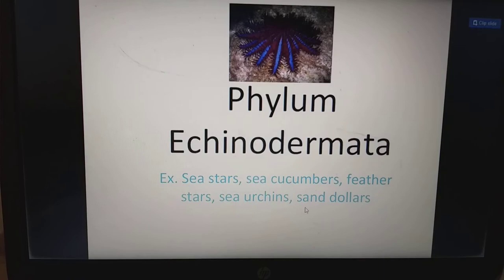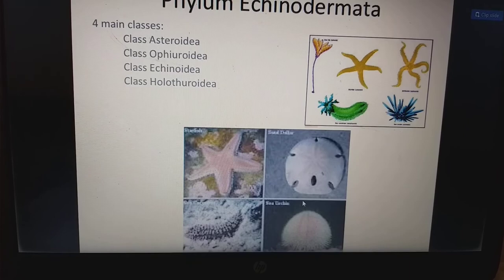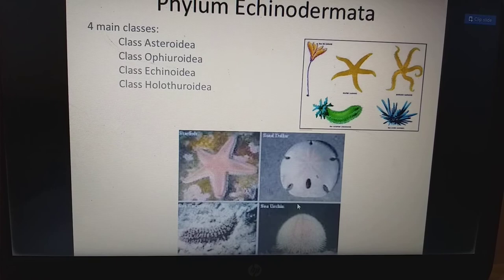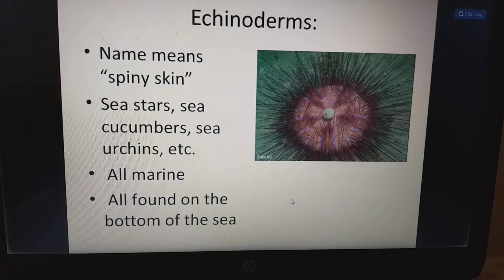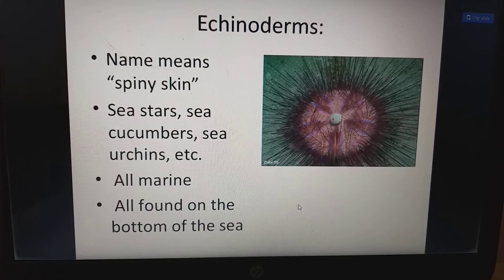In the phylum Echinodermata, we have four main classes: Class Asteroidea, Class Ophiuroidea, Class Echinoidea, and Class Holothuroidea. Echinoderms — name means spiny skin — include sea stars, sea cucumbers, sea urchins, etc. All are marine, all found on the bottom of the sea.